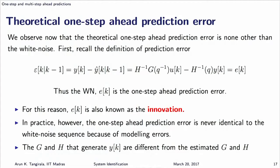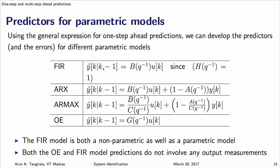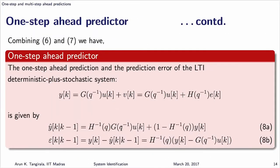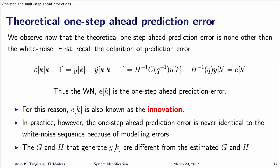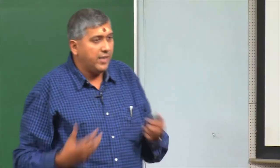The OE model, although it has denominator dynamics unlike FIR, still does not make use of measurements at all. That is the uniqueness or peculiarity of an output error model. Now, let us recall one important aspect: the theoretical one-step ahead prediction error is nothing but white noise. All you have to do is take the expression for y-hat, subtract it from y, and you will be left with e(k) - the unpredictable portion.